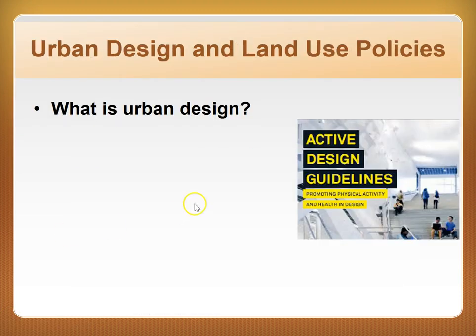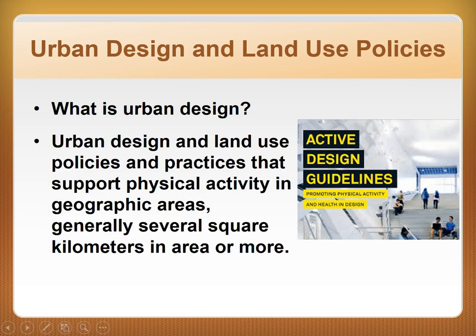The second way physical activity can be influenced by the built or physical environment is through urban design and land use policies. Urban design and land use are separate constructs but are frequently combined in discussion of the physical and built environment and physical activity. Urban design refers to the form, function, and outward appearance of the physical environment in defined entities such as neighborhoods, towns, cities, and communities. Examples of urban design for physical activity include landscape design in municipal parks, street design for pedestrian safety, and recreation center design and placement within a community.